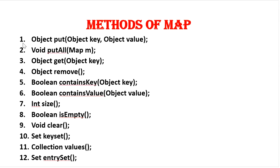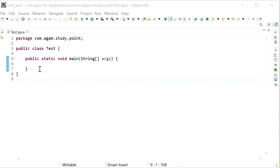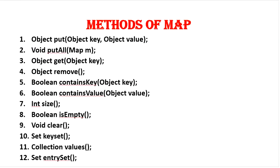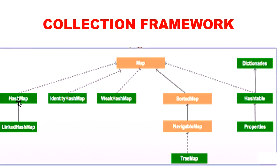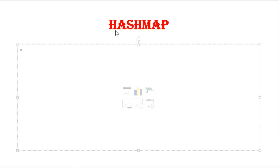Now we will use these functions in one program. But before creating this program, first we need to discuss about its implementation class, that is HashMap. The underlying data structure used in HashMap is a hash table. Heterogeneous objects are allowed for both the keys and values. Duplicate keys are not allowed but values can be duplicate. Insertion order is not preserved because HashMap uses the hash code value of the keys to store the objects.